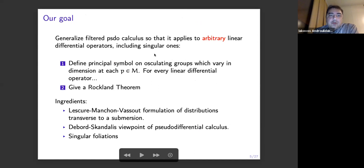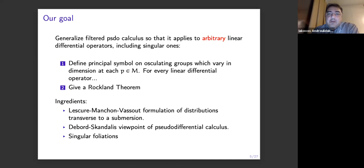So let me tell you what we want to do. We want to generalize this calculus so that it applies to arbitrary linear differential operators, well, if possible — including singular ones. So we want to be able to define the principal symbol of differential operators on osculating groups, these nilpotent groups. But we don't want the dimension to be constant at every point — we want to allow the dimension to vary. This is really the singularity. And we want to give a Rockland theorem in this context.